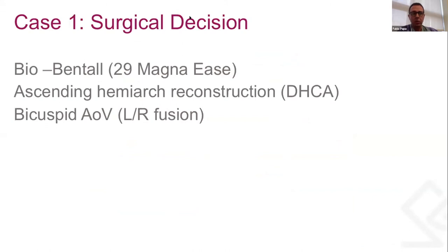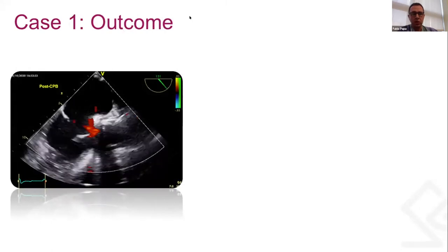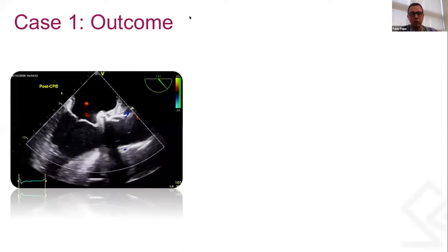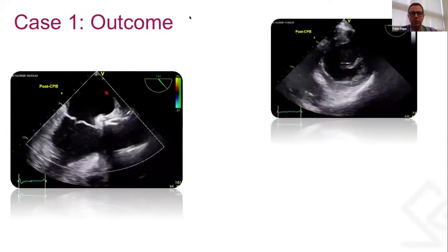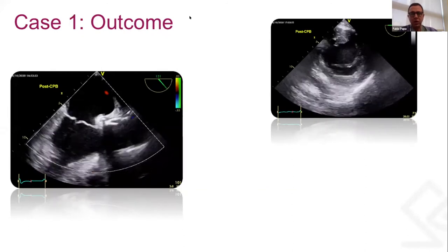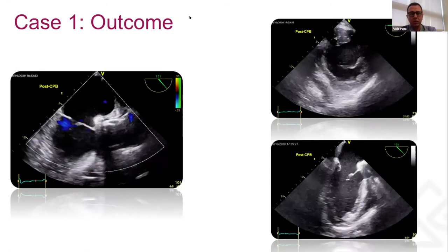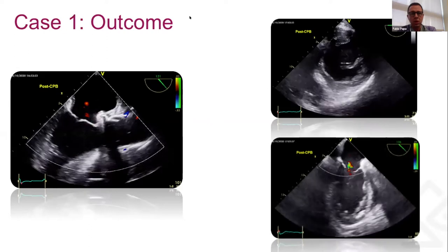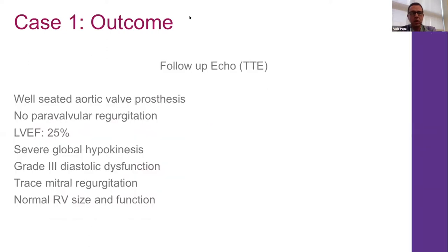The patient ultimately underwent a bio-Bentall procedure with ascending aortic reconstruction. Intraoperatively, the aortic valve was found to be bicuspid with left-right fusion. Coming off bypass on significant inotropic support — 10 mcg/kg/min of dopamine — the patient was hyperdynamic. We noted a small residual mitral regurgitation. Follow-up echo two weeks post-surgery showed marginal improvement in LV function from approximately 10-15% to 25%, with no paravalvular regurgitation, only trace mitral regurgitation, and normal RV function.